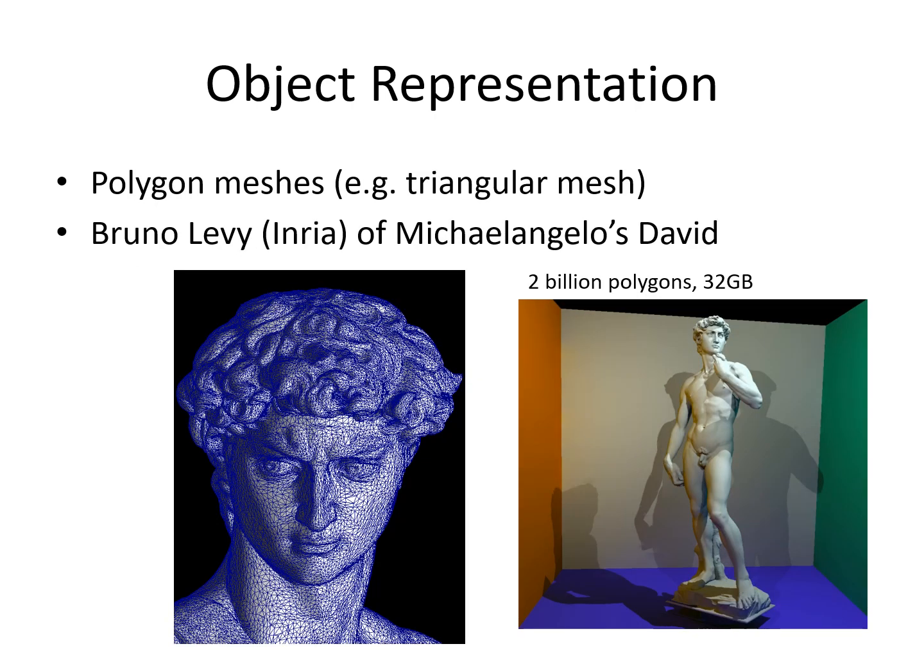We will focus on polygon meshes, for example, a triangular mesh. The object is made up of lots of triangles representing the surface. In this example, the object was scanned from Michelangelo's David in Florence in 2000. It has 2 billion polygons and takes 32 gigabytes of storage. Even now, it is difficult to fit the full model into memory for rendering, and graphics cards still do not have enough memory for this whole mesh.